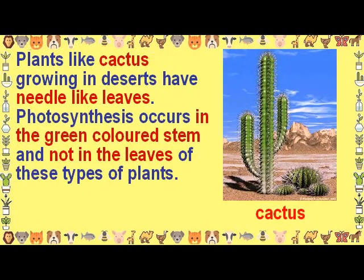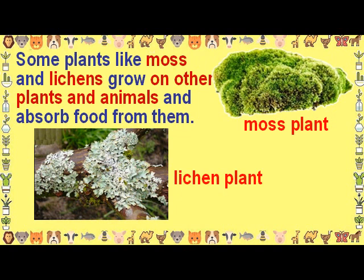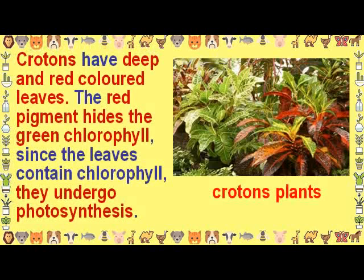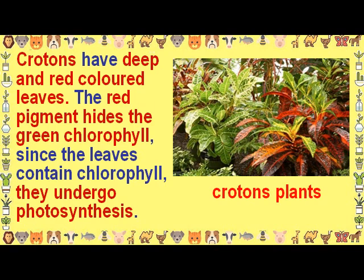Plants like cactus growing in deserts have needle-like leaves; photosynthesis occurs in the green-colored stem, not in the leaves. Some plants like moss and lichens grow on other plants and absorb food from them. Crotons have deep red-colored leaves — the red pigment hides the green chlorophyll, but since the leaves contain chlorophyll they still undergo photosynthesis.